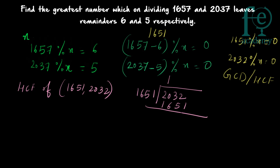The remainder is 381, since 2032 minus 1651 = 381. Now 381 becomes the new divisor, and the previous divisor 1651 becomes the new dividend. So next we compute 1651 divided by 381.